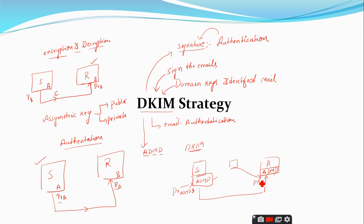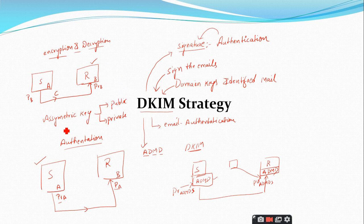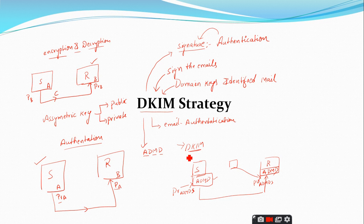The receiver's ADMD will take the sender's ADMD public key and check the signature. So we have discussed three strategies: how asymmetric keys are used for encryption and decryption, how public and private keys are used for the signature technique for authentication service, and how DKIM makes use of public and private keys to provide the authentication service.